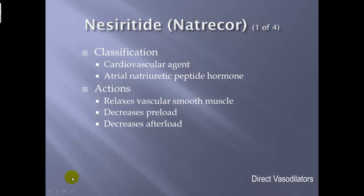Nesiritide, or Natrecor — a new drug. Classification: cardiovascular agent. It is essentially a synthetic version of atrial natriuretic peptide (ANP). ANP is the negative feedback system for angiotensin II in the renin-angiotensin-aldosterone system. Angiotensin II causes vasoconstriction, so ANP causes vasodilation. When blood pressure is sufficient, ANP is secreted to prevent excessive pressure.